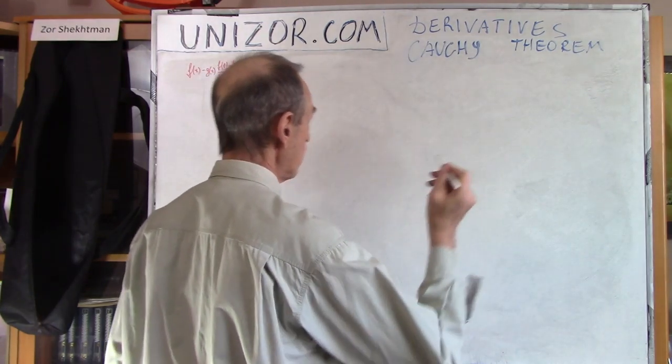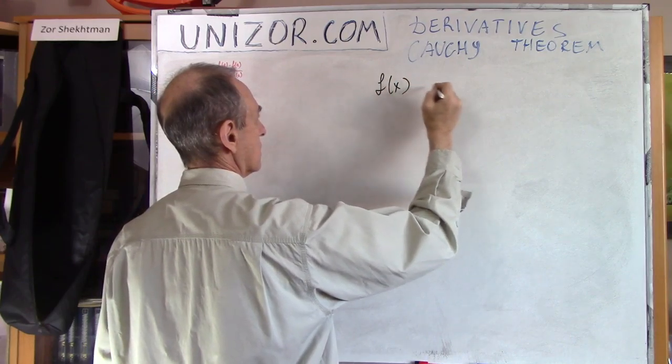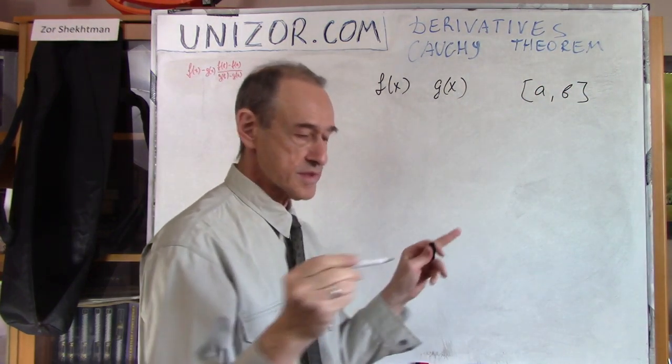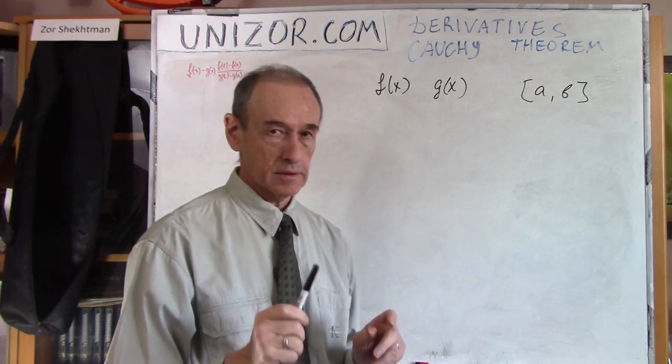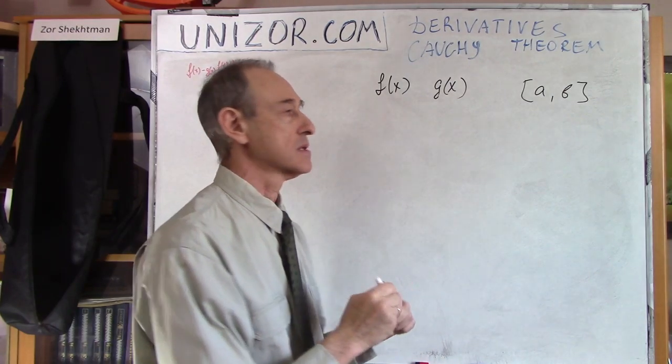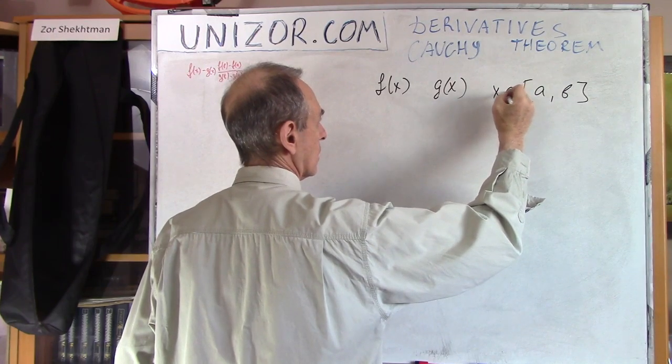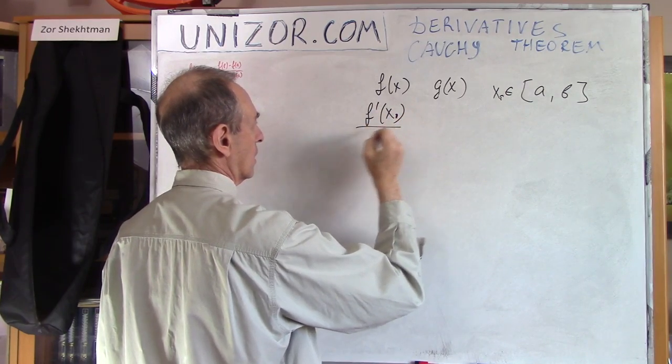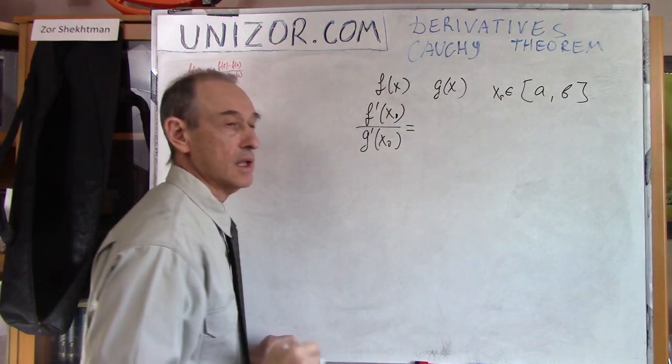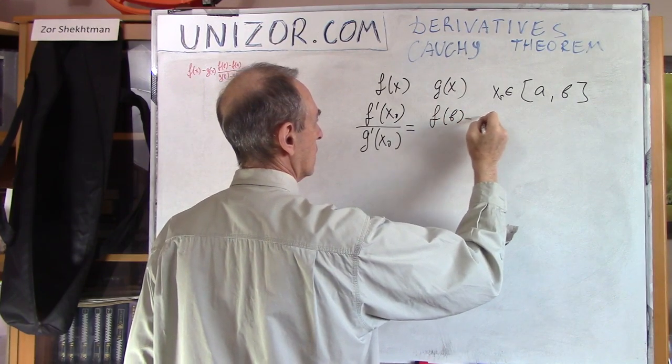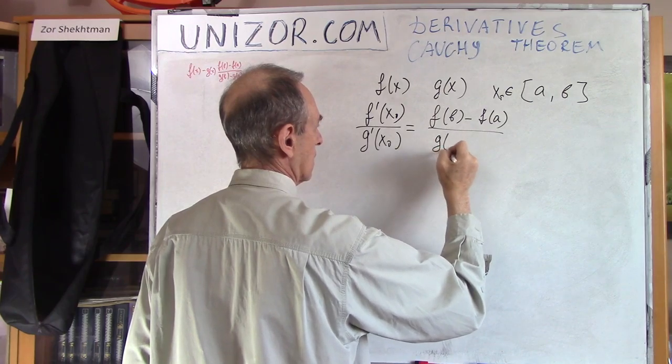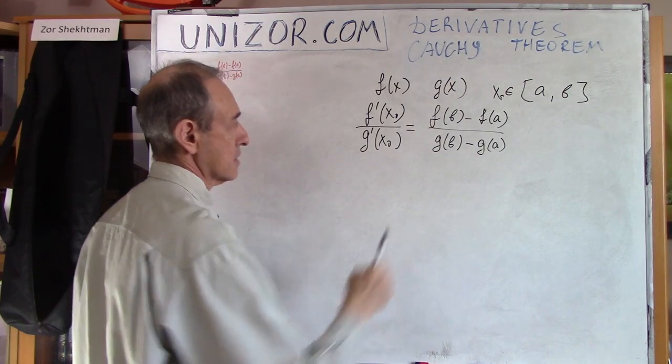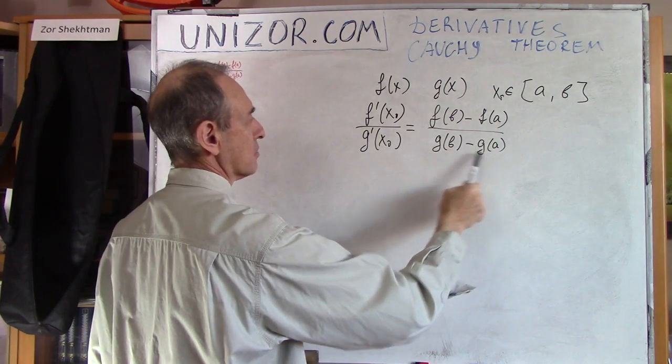And this Cauchy is just a more complicated form of Lagrange, also based on Rolle's theorem. So what is Cauchy's theorem? If you have two functions now, f of x and g of x, both defined on the segment AB with boundaries, then what's important is there is such a point x0 which belongs to this segment where the ratio of derivatives at that point is equal to the ratio of increments of these functions on this segment.